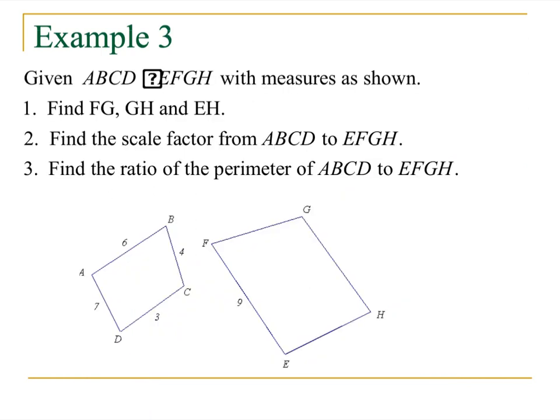So we've got ABCD is similar. Similar, thank you, wonderful PowerPoint importing into this program. Similar to EFGH. So those two polygons. Now, I've got measures labeled accordingly. I want to find FG, GH, and EH. I also want to find the scale factor from ABCD to EFGH. And then I've got to deal with some ratio of the perimeters of ABCD to EFGH. Got a lot going on here. This is exciting stuff.